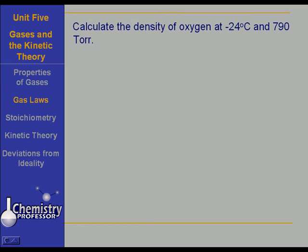Here's a problem. Let's calculate the density of oxygen at minus 24 degrees Celsius and 790 torr. We're going to use our newly derived formula: D equals P times GMW over RT.